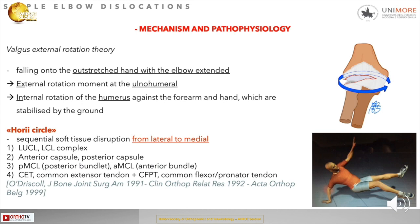The mechanism of pathophysiology is the valgus external rotation theory: a fall on the outstretched hand with the elbow extended, consisting of an external rotation moment at the ulnohumeral joint and an internal rotation of the humerus against the forearm and hand, which are stabilized by the ground.